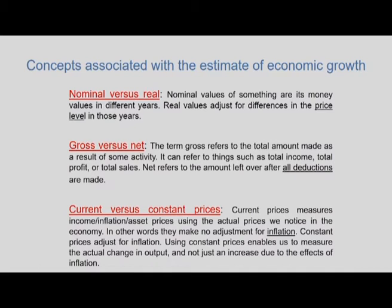In economics, nominal values of something are its money values in different years. Real values adjust for differences in the price level — essentially whether values are adjusted for inflation. For a series of nominal values in successive years, different values could simply reflect differences in the price level, and nominal values do not specify how much of the difference comes from price changes. Real values remove this ambiguity by converting nominal values as if prices were constant in each year, so any differences are attributed to differences in quantities of goods.